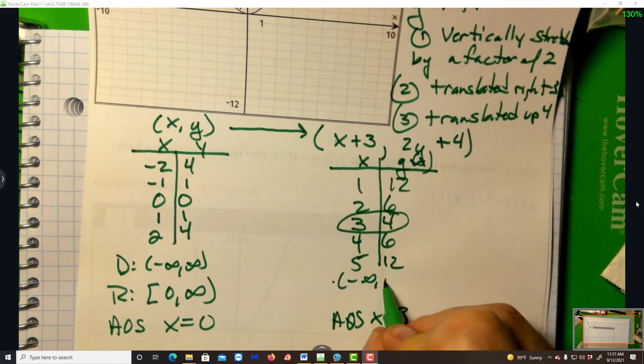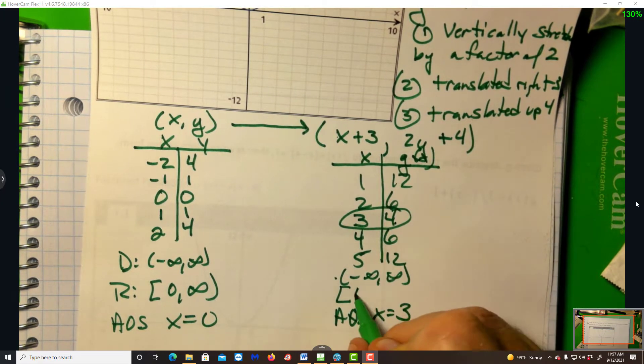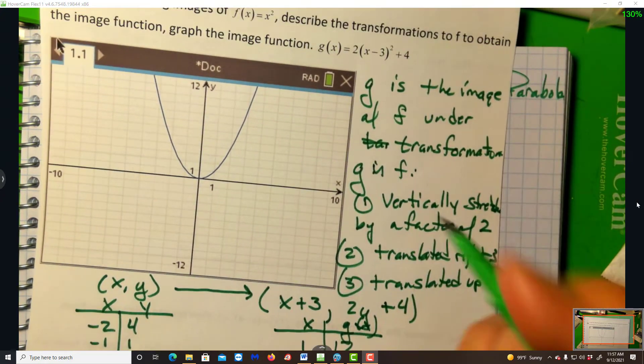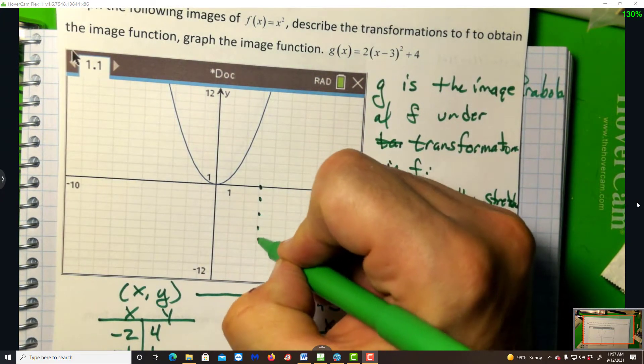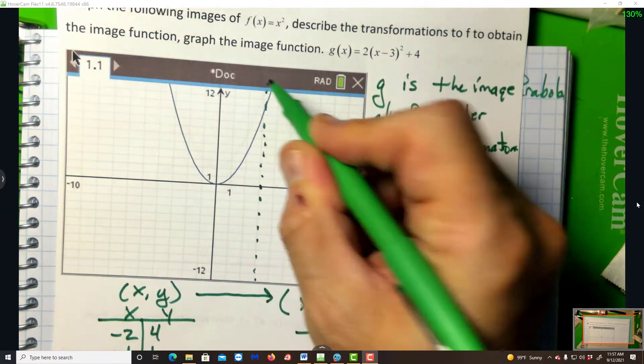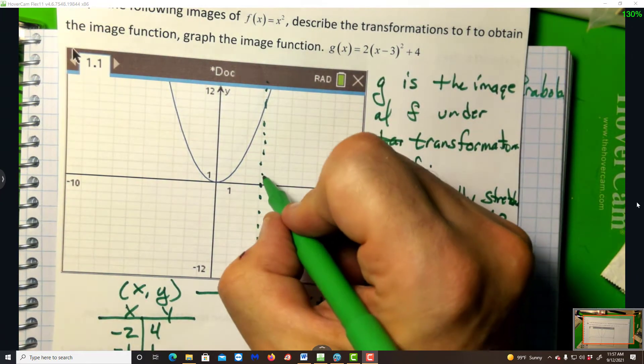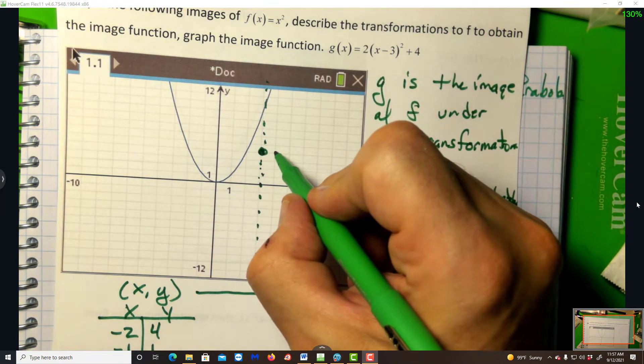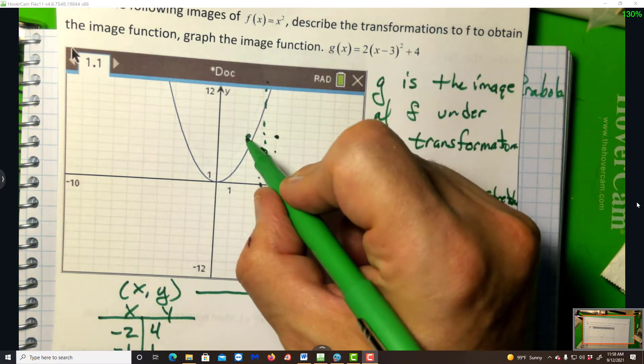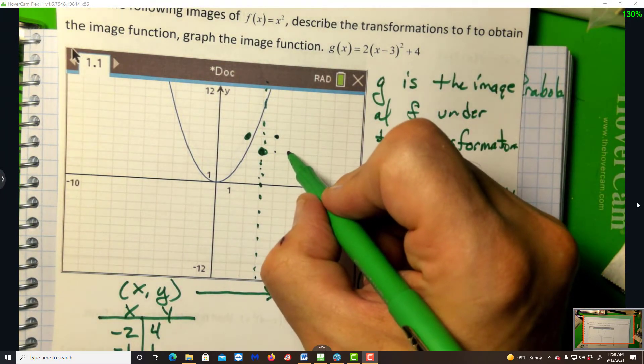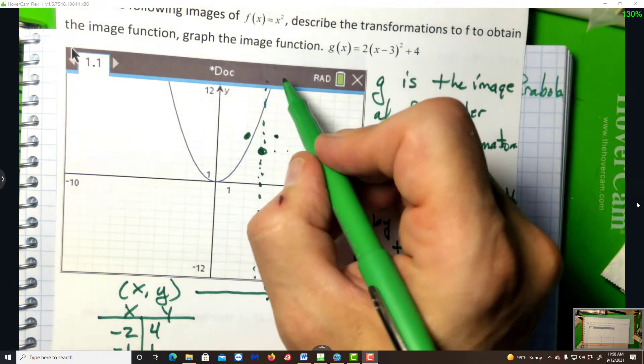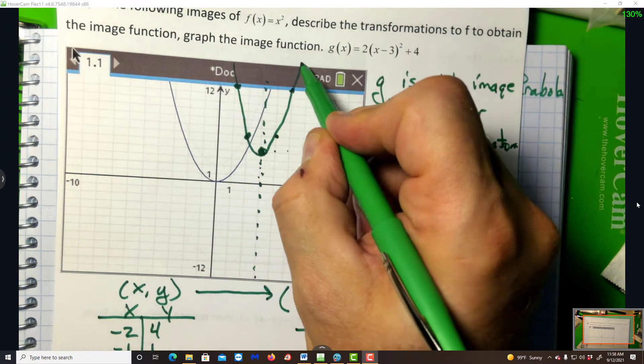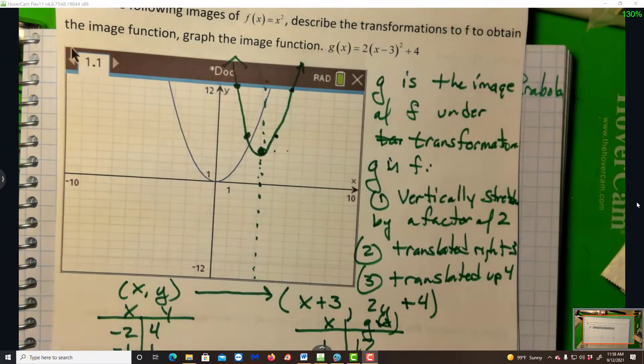Your domain is all reals again. That doesn't change. But your range, since it opens upwards, is from 4 to infinity. So we can come over here now, and the axis of symmetry is at positive 3. Notice the vertex always lies on the axis of symmetry.